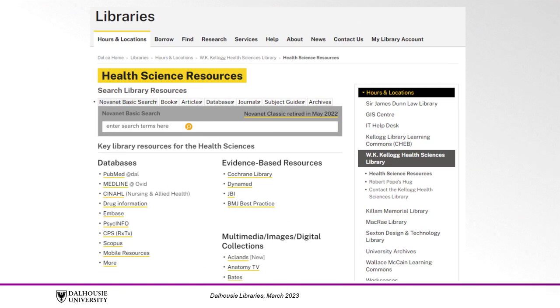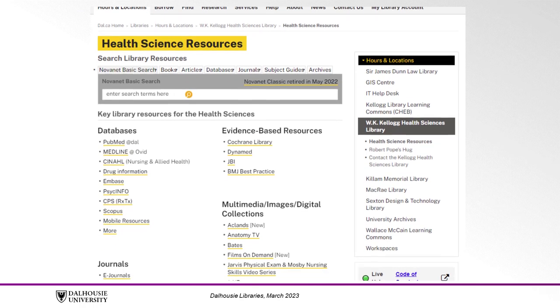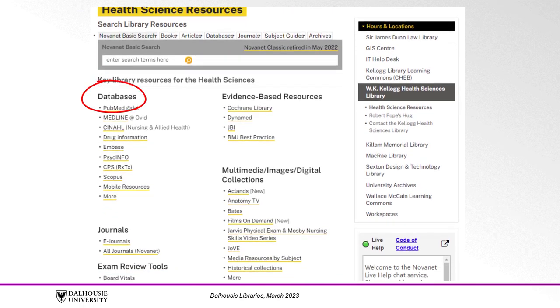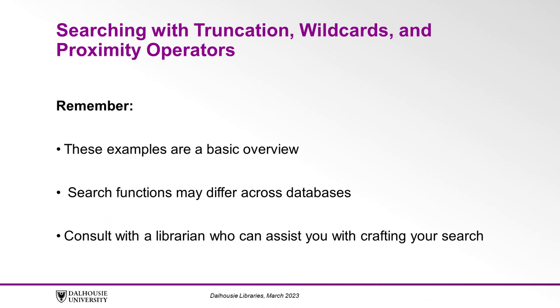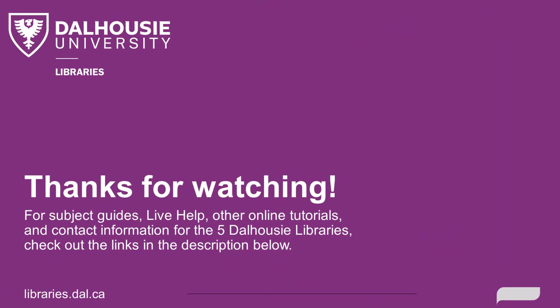Truncation, wildcard, and proximity searching can also be used in other databases, but the exact search functions may be different. It is also important to note that these examples provide a basic overview of these search functions, and for your specific search, it is best to check with a librarian who can assist you with crafting a well-developed search that meets your research goals. Thanks for watching. For subject guides, live help, other online tutorials, and contact information for the five Dalhousie libraries, check out the links in the description below.